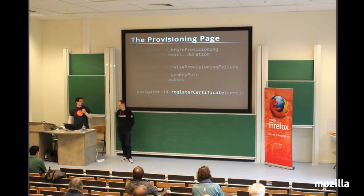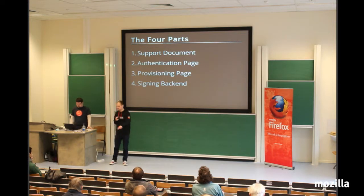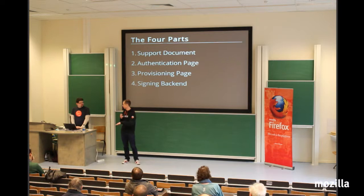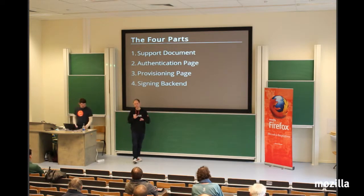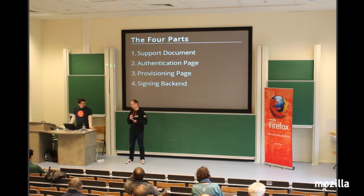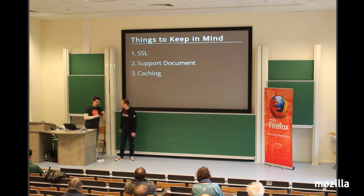Those are the only six functions you need to become an identity provider. There are four parts: the support document (your advertisement that you support the Persona identity provider protocol), the authentication page, the provisioning page where you generate the key pair and certificate, and the signing back end. You have to sign certificates on the back end because you need your private key — you don't want to publish that anywhere, or anyone could masquerade as you. For ID.me, all of that — including the HTML and front and back ends — was implemented in about 130 lines of code.